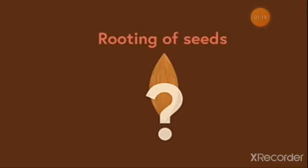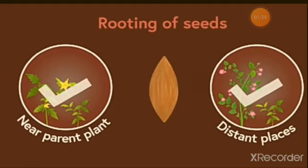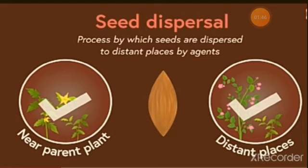But now, the question arises, how are these seeds fixed in the soil? Do they always get rooted near the parent plant or sometimes at distant places also? Seeds can be dispersed nearby or at distant places as well. This is because seeds are dispersed at distant places by various agents. The process is known as dispersion of seeds.